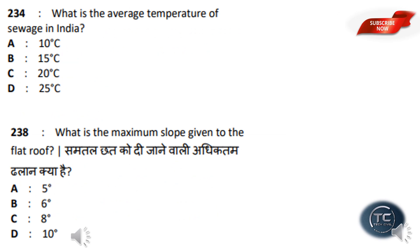What is the average temperature of sewage in India? The options are 10°C, 15°C, 20°C, 25°C — the answer is Option C, 20°C. What is the maximum slope given to a flat roof? The options are 5°, 6°, 8°, 10° — the answer is Option D, 10°.